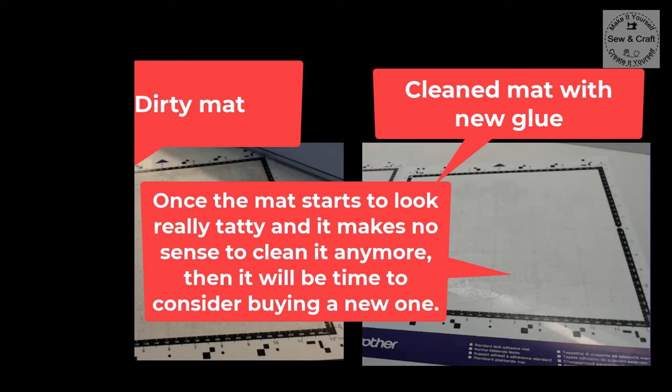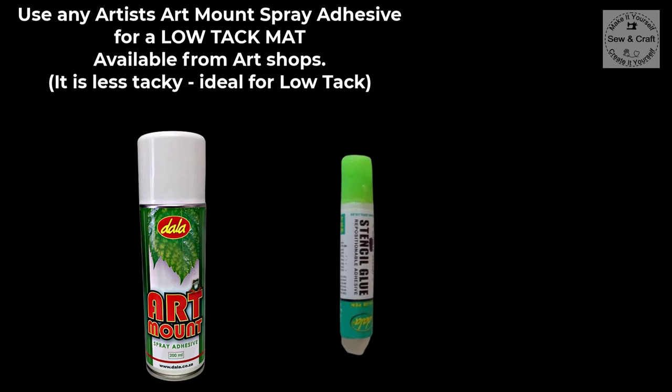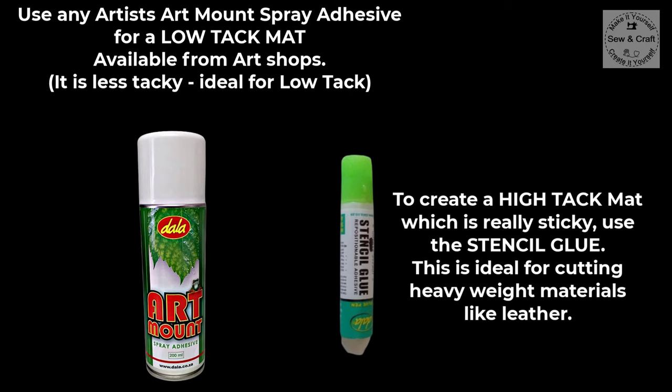If you would like to make your other mats tacky, for example your low tack mat, then you would use any artist's art mount spray adhesive for the low tack mat. This is available from art shops and because it is less tacky it is ideal for the low tack mat. Then if you would like to create a high tack mat which is really sticky then you could use the stencil glue. This is ideal for cutting heavyweight materials like leather. It's also available from art shops and some hardware shops and just read the instructions that are printed on the stencil glue container because they'll explain to you how to apply the stencil glue.